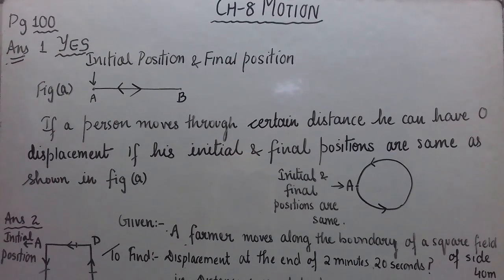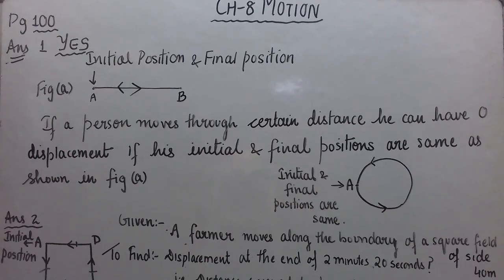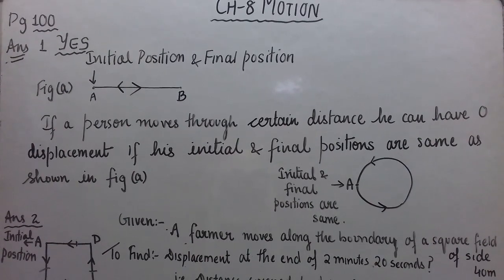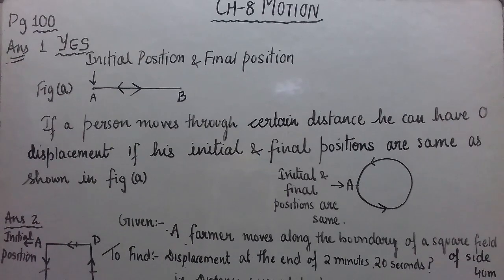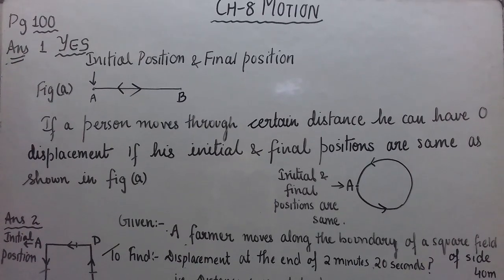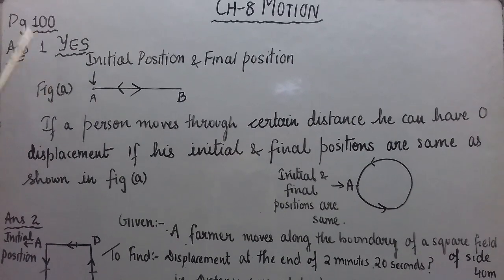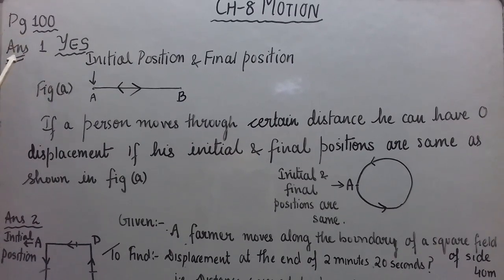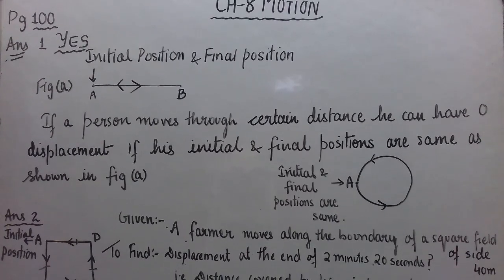The first question is: an object has moved through a distance — can it have zero displacement? If yes, support your answer with an example. So in this question, the object is in motion and has moved through a certain distance. They are asking if it is possible for an object to have zero displacement. Yes, our answer should be yes. When we write the answer in physics in the form of yes or no, we should justify our answer.